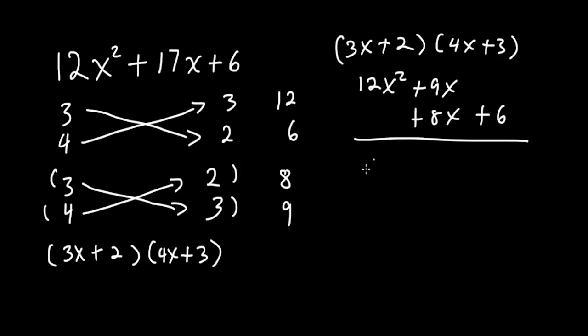So this adds up to 12x squared plus 17x plus 6, which is the original trinomial. Simple as that. Thank you for listening. Please like and subscribe.